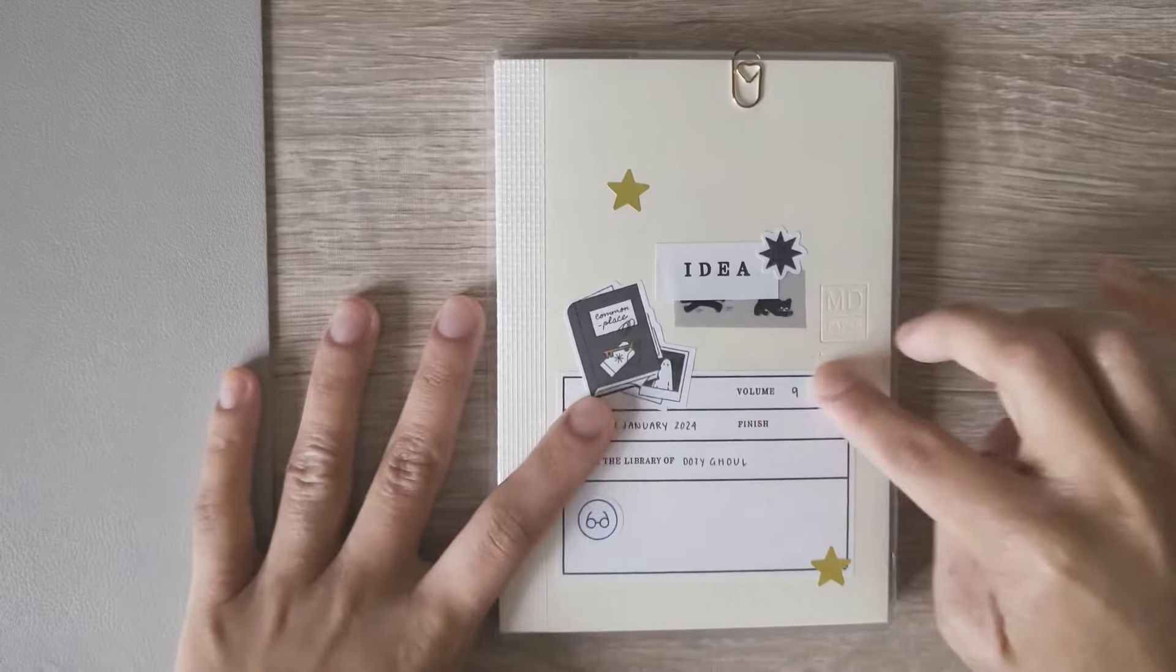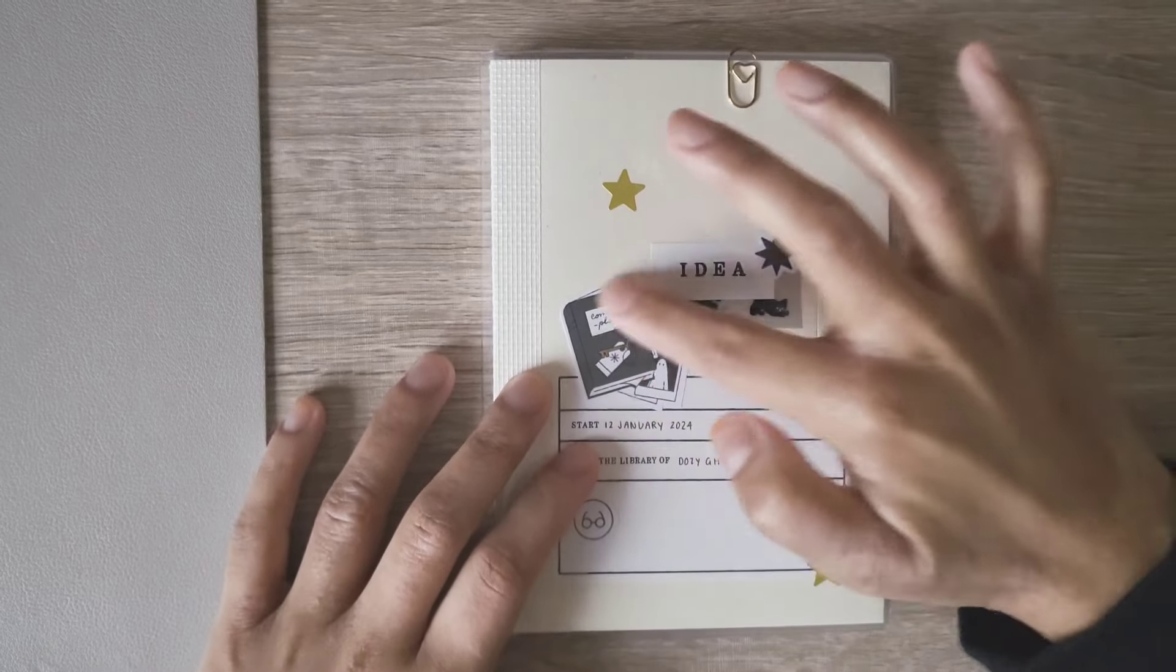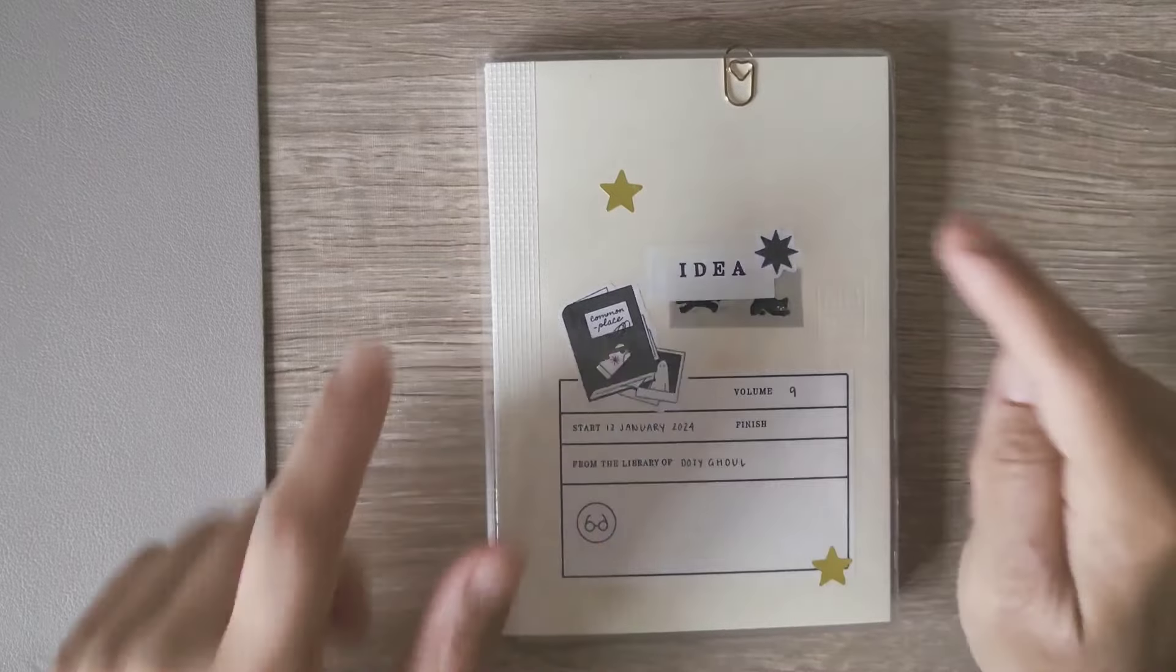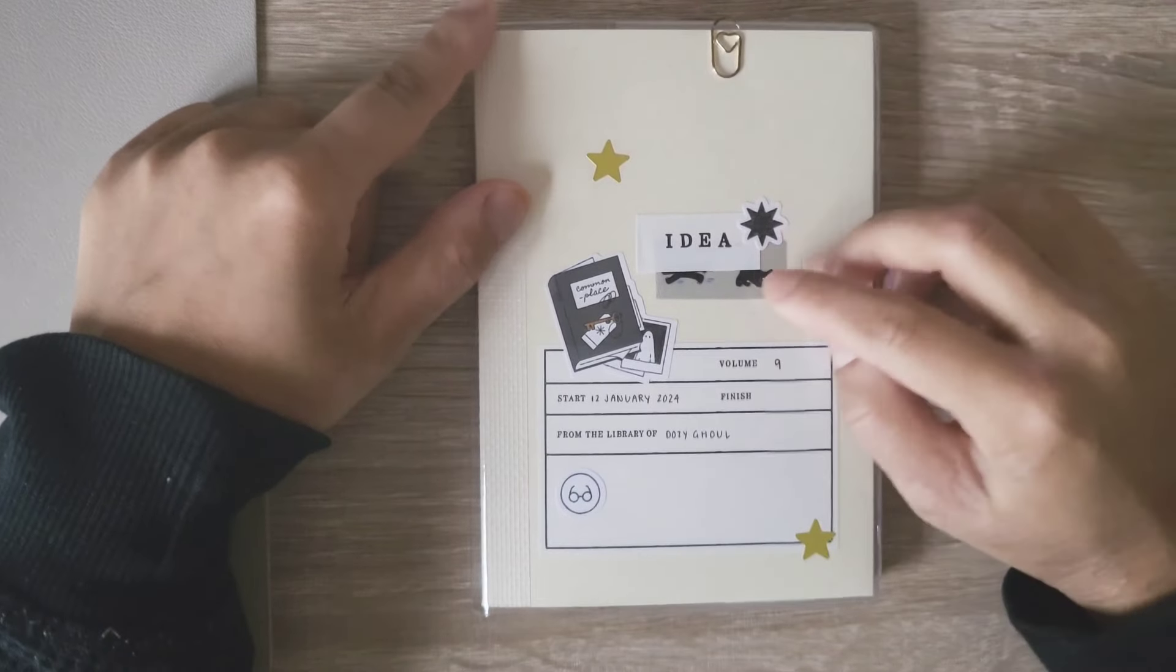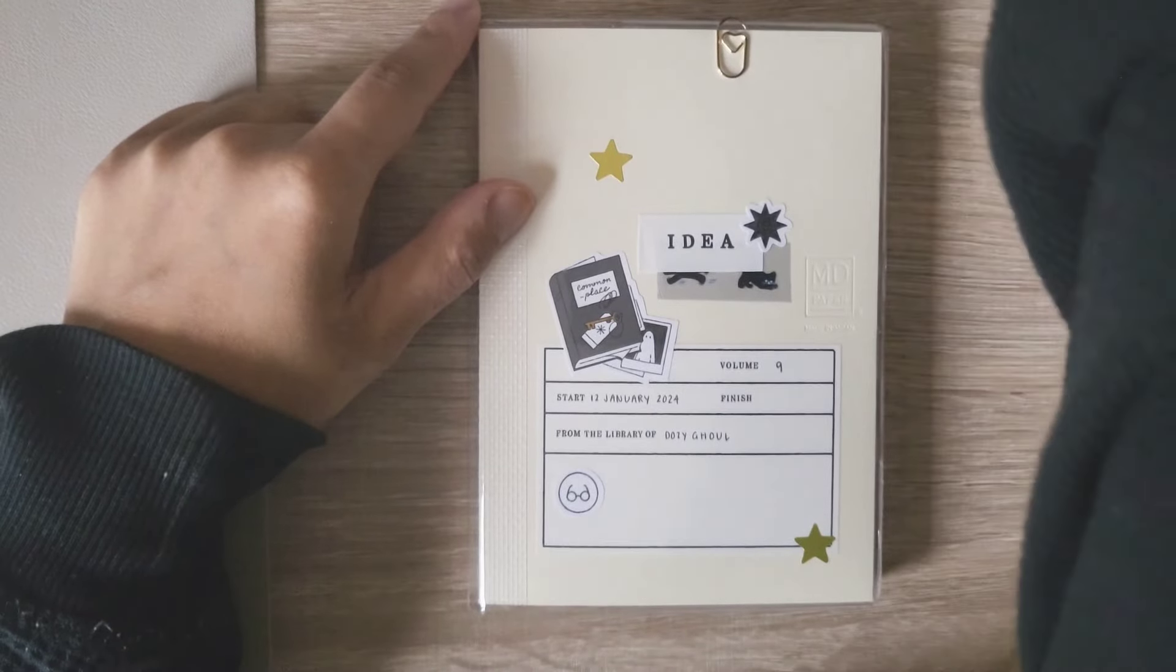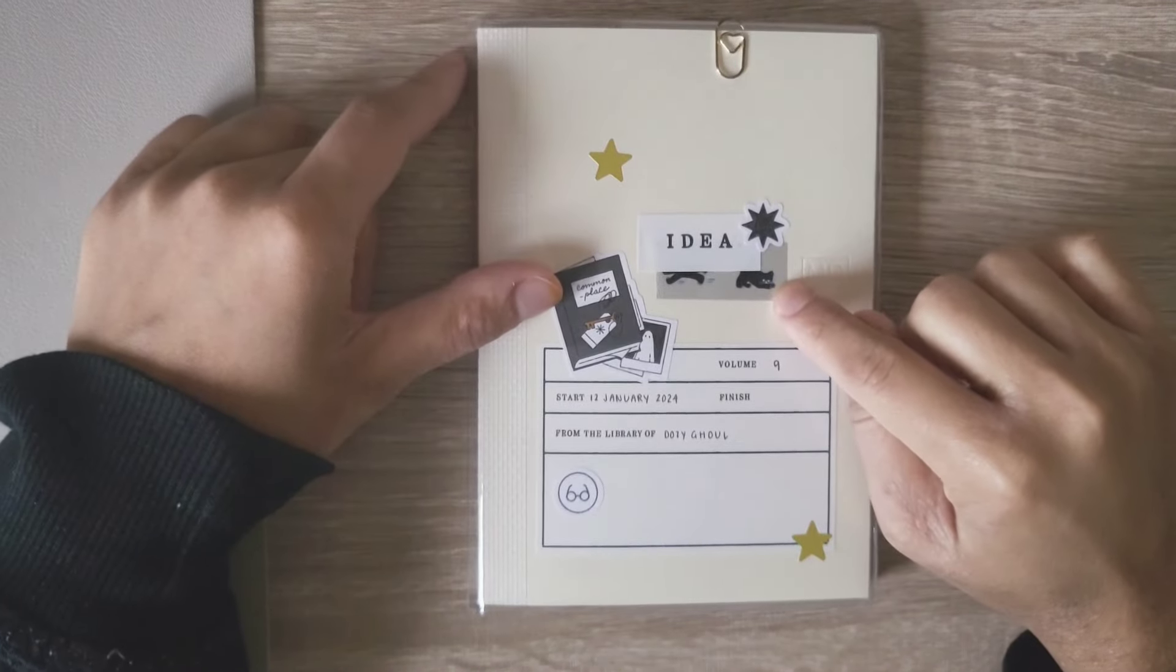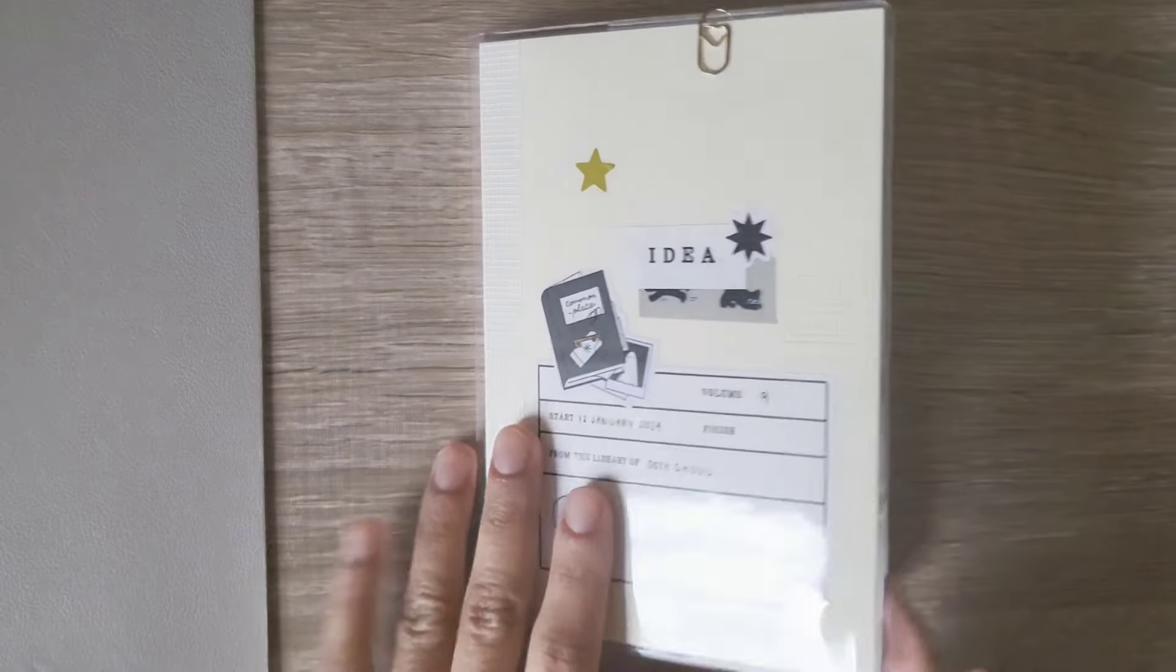This is the front. This is the archive labels that come with the Midori books. This is a Megan Rhiannon Halloween sticker, as is that, but that's not a Halloween one. And that is also a Megan Rhiannon sticker. The idea also comes with the Midori books. I think this cat washi is an MD washi tape, and then two star stickers.